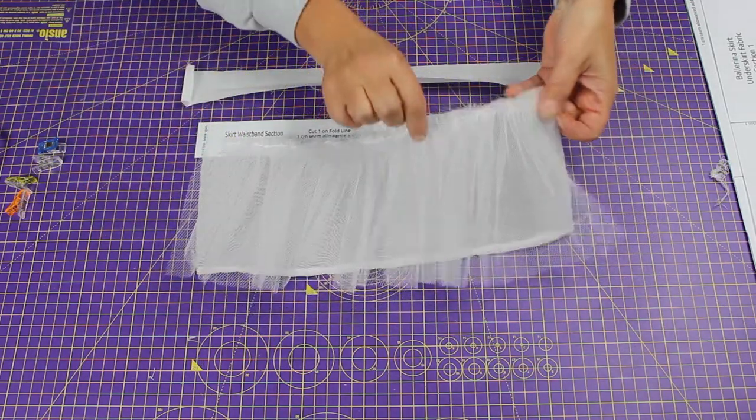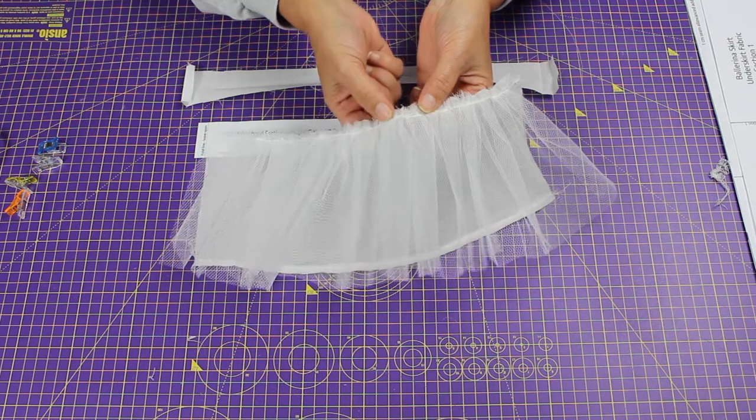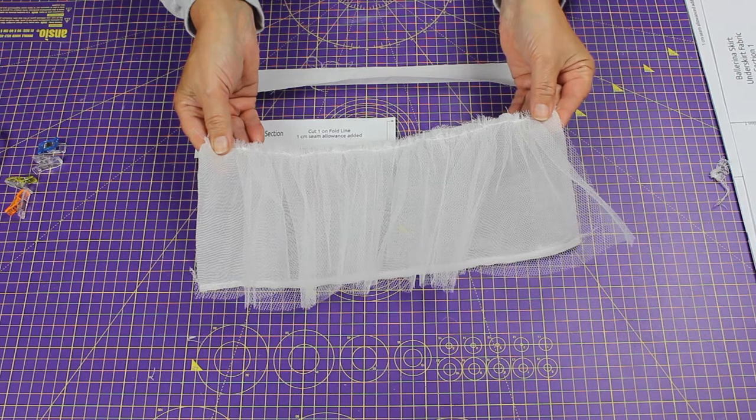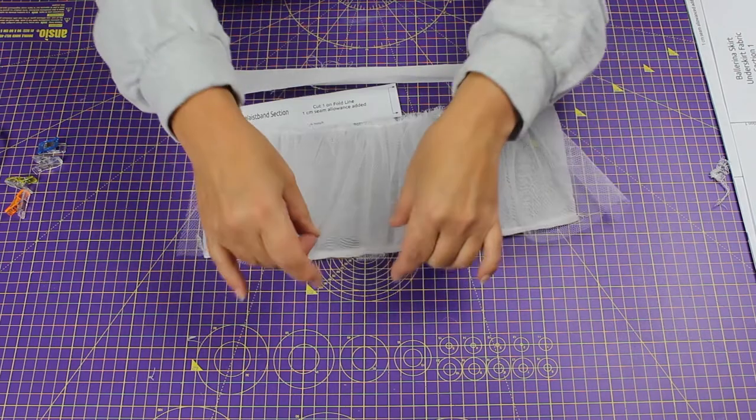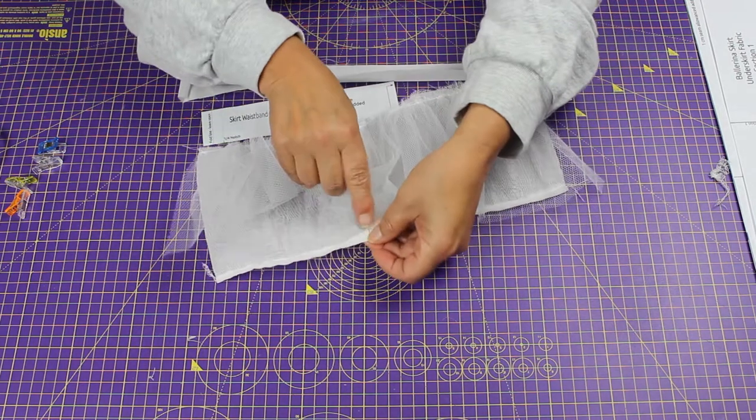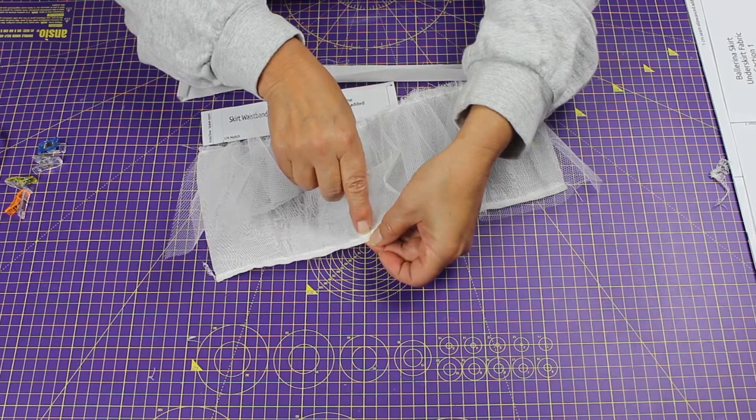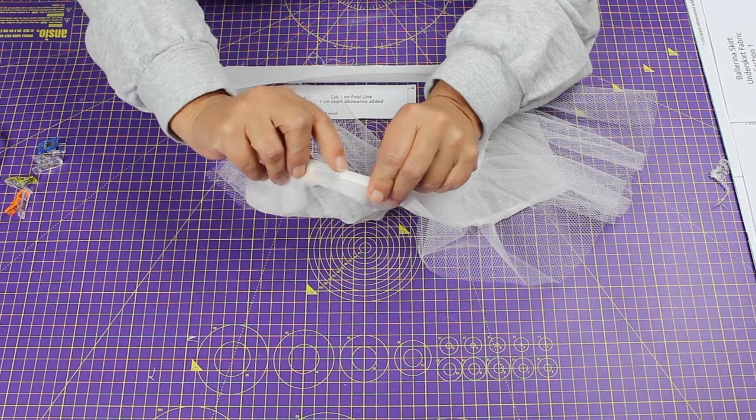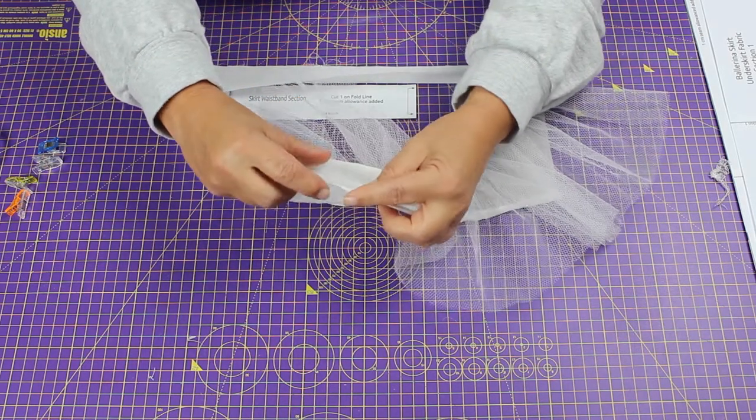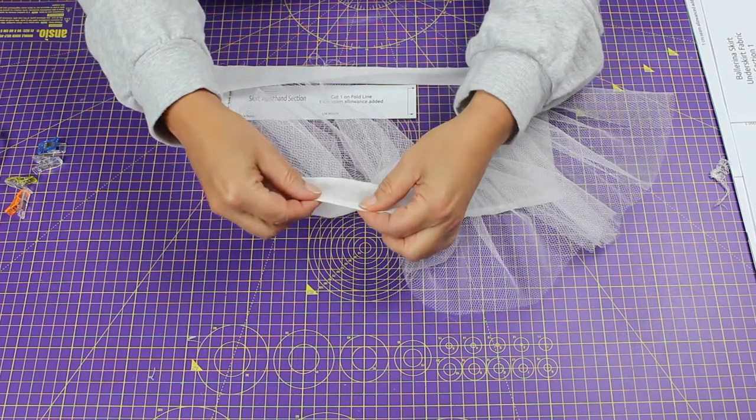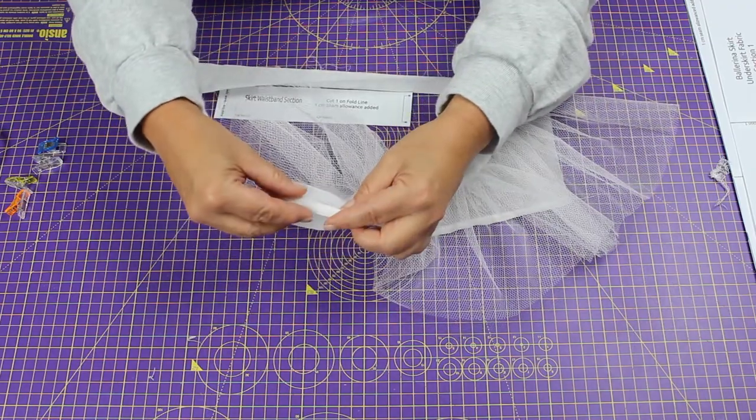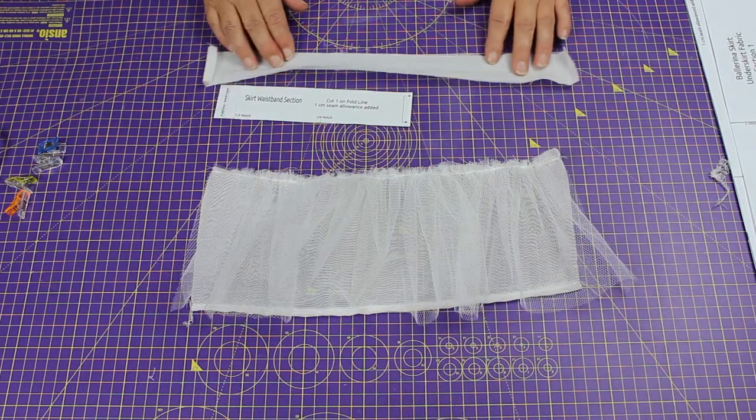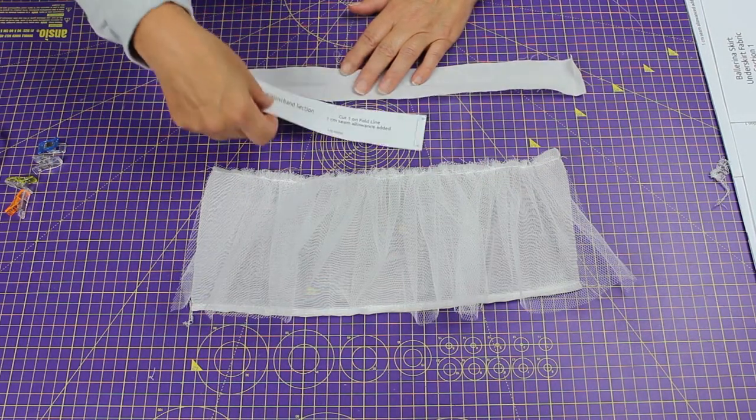I've attached the netting to the underskirt waistband edge to edge. I've also stitched up the hem. I used my overlocker, but if you don't have one, you can either do a very narrow double hem and stitch that up to secure it.